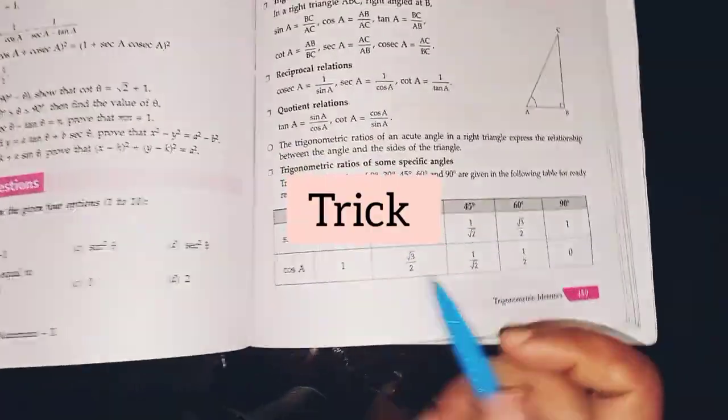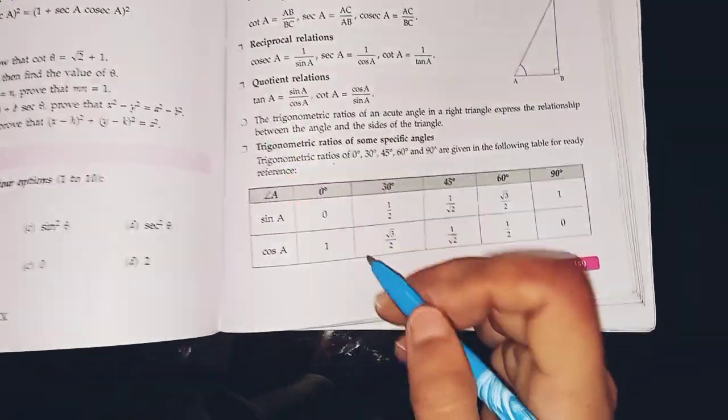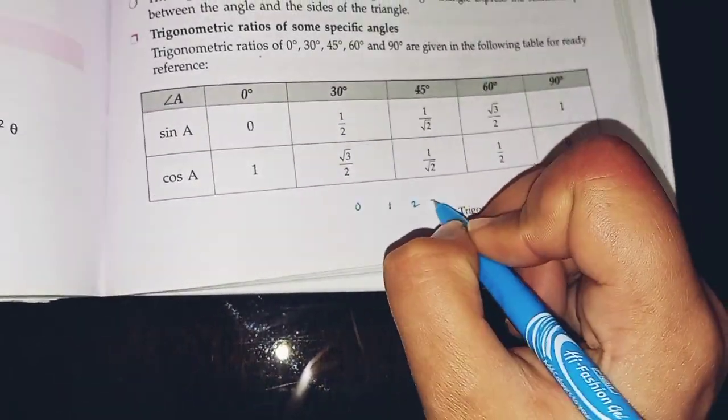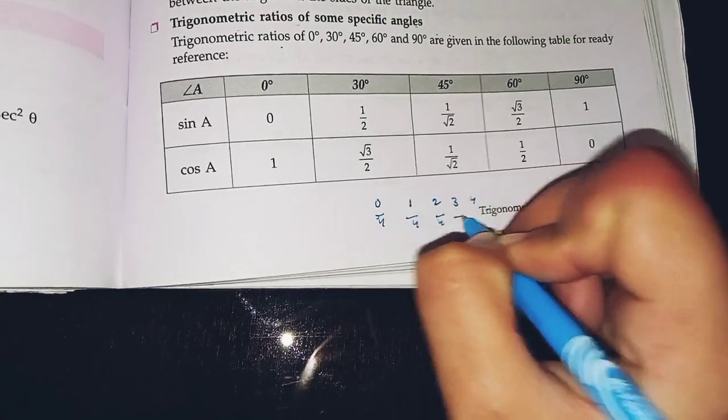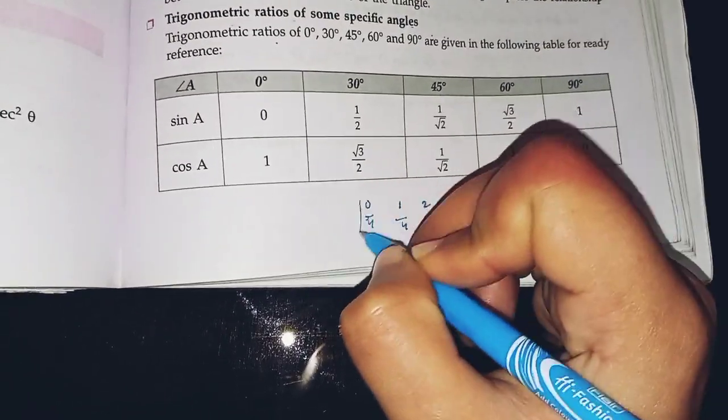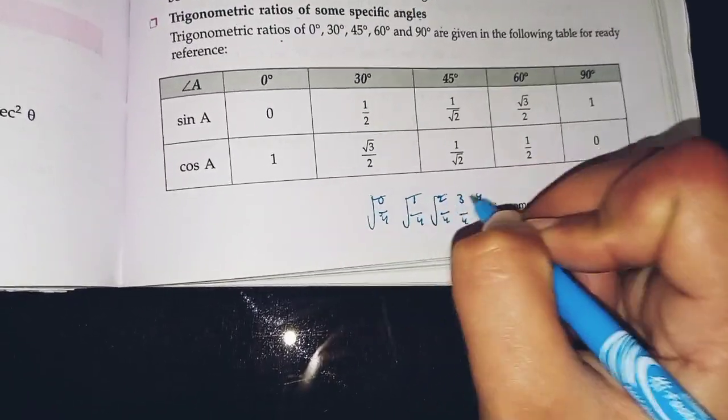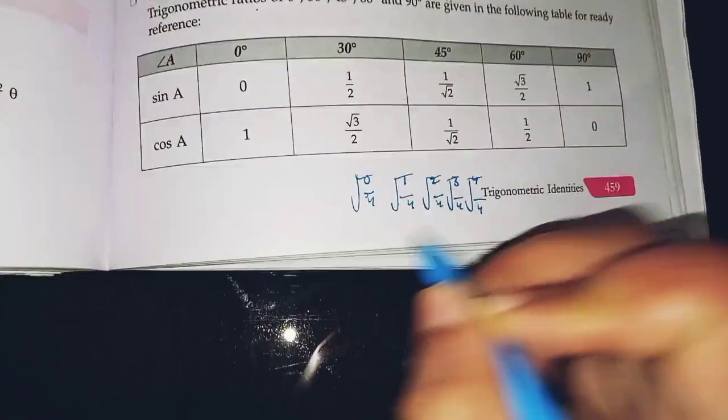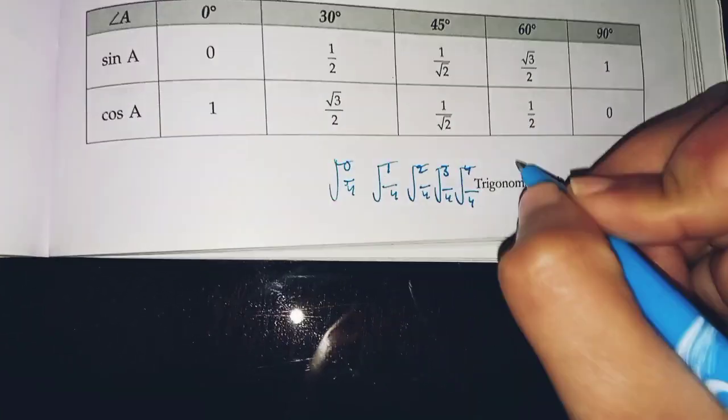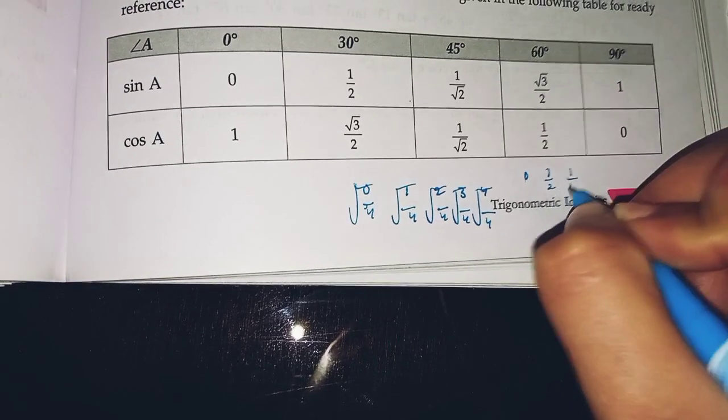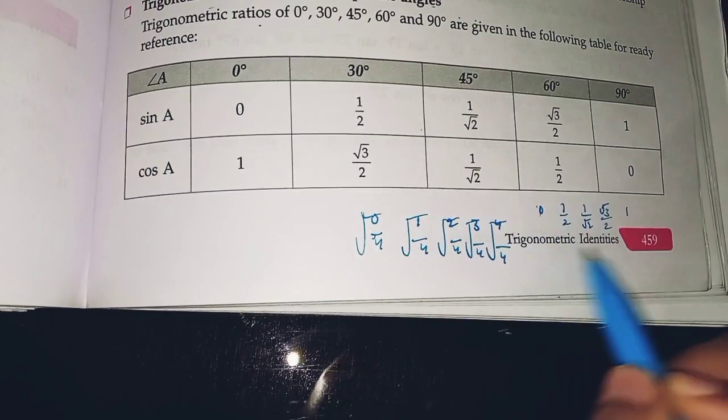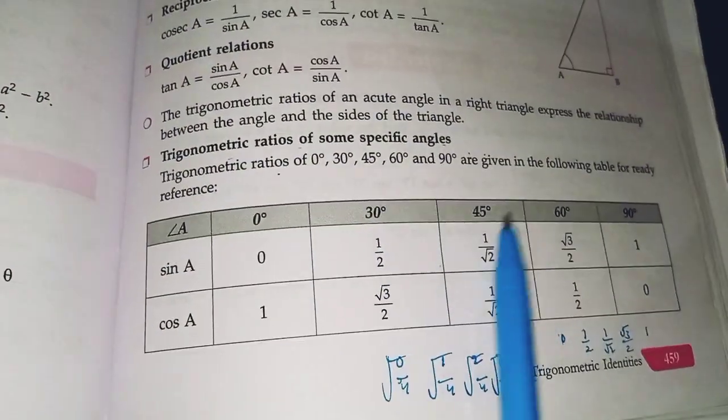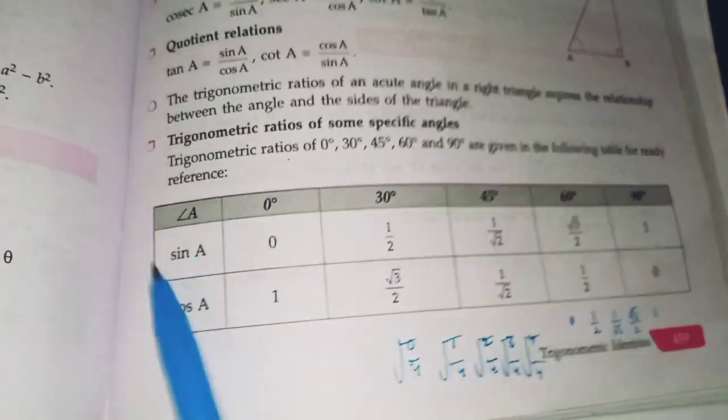So, there is a trick if you know. Like you'll write 0, 1, 2, 3, 4 and then divide by 4. And then you'll write the under root. When you'll solve them, you will get 0, 1 by 2, 1 by root 2, root 3 by 2 and 1. And these are the angles for 0, 30, 45, 60, 90 for sine.